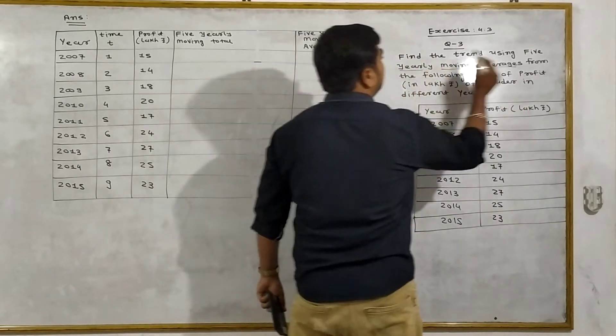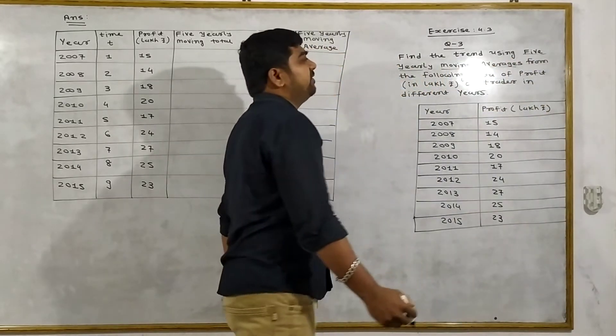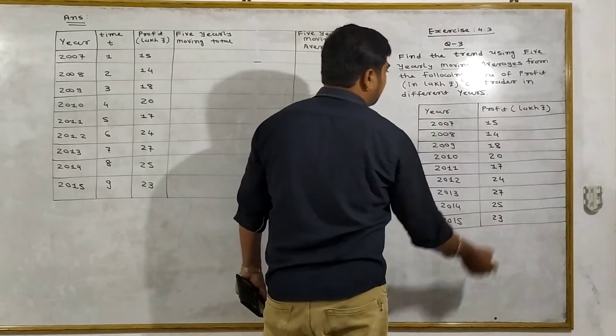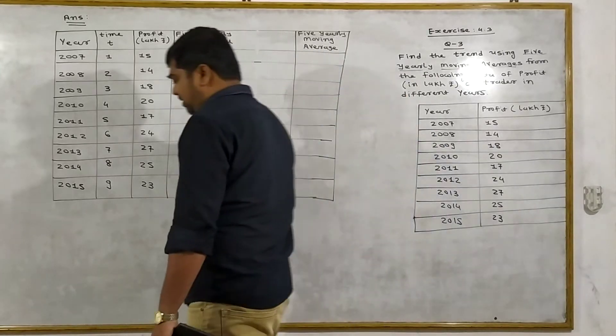5 yearly moving average method. Here is the year and profit available. The first step of the calculation is to identify the years.